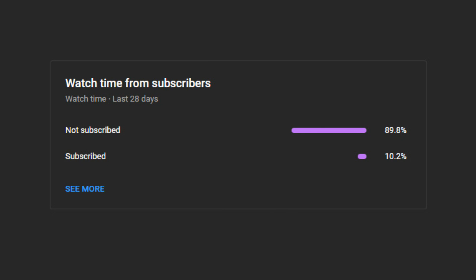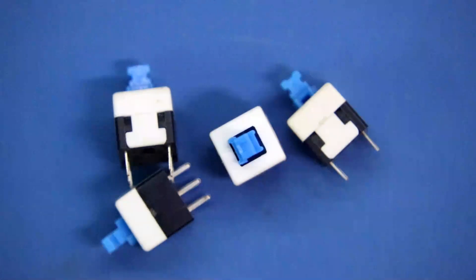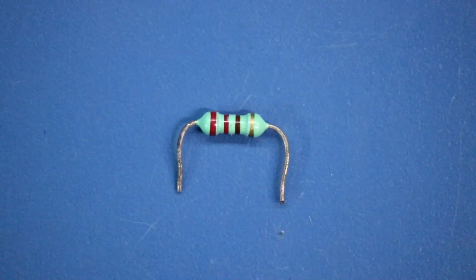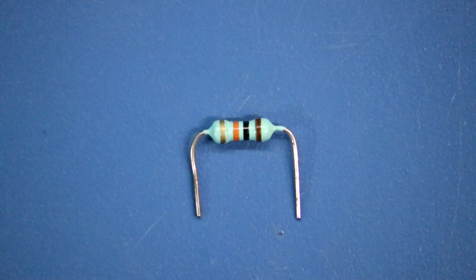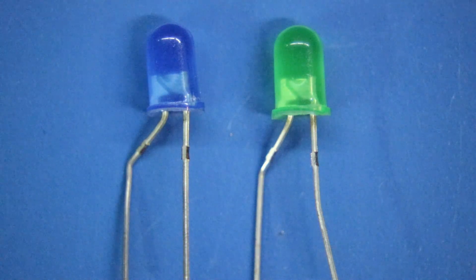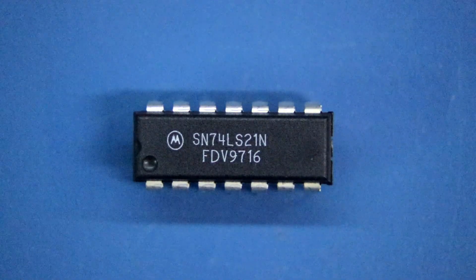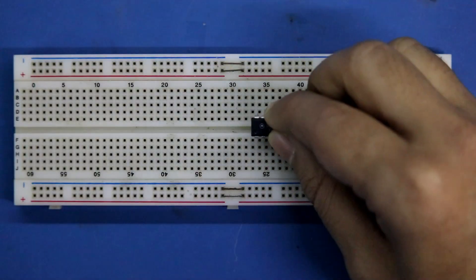To provide input I'll use this kind of switch, 220 ohms resistor, 10 kilo ohms, blue and green LED, and this is the IC 7421. Putting the IC.